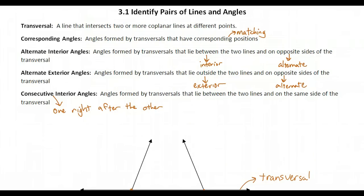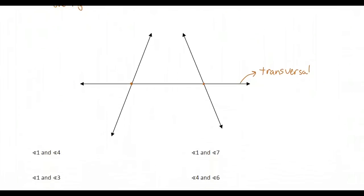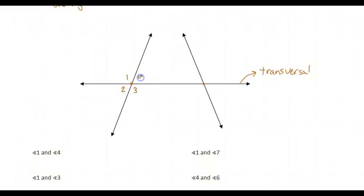So let's number the angles created. If you notice, this transversal and these two lines create eight angles. Number your angles this way: angle one, two, three, and four at the top intersection, and five, six, seven, and eight at the bottom intersection.